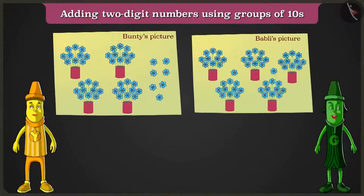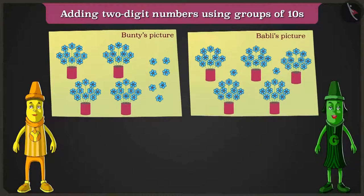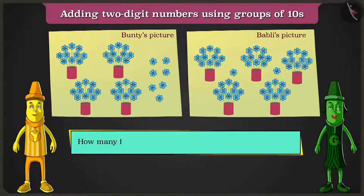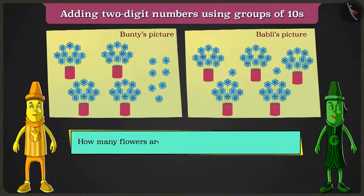Look, Greeny! Bunty and Bubbly have drawn paper-made flowerpots with ten flowers each. And yes, there are some loose flowers too. Yellow, can you tell me? In Bunty and Bubbly's drawing, how many flowers are there in total? Let us count them.